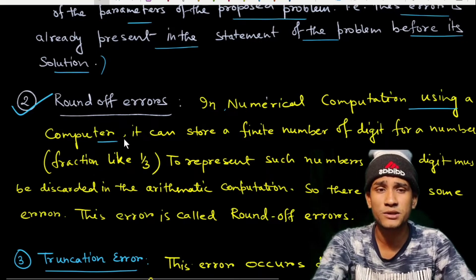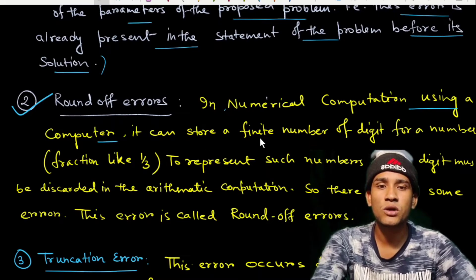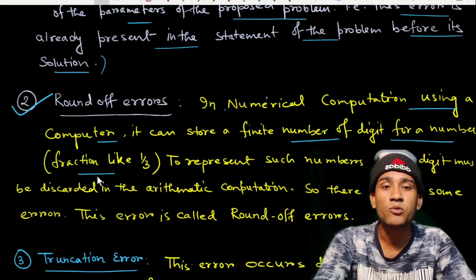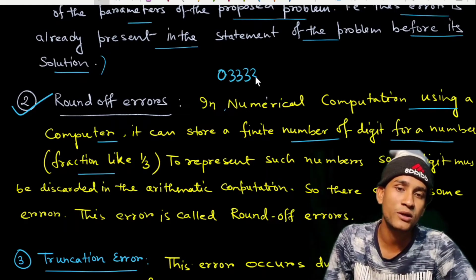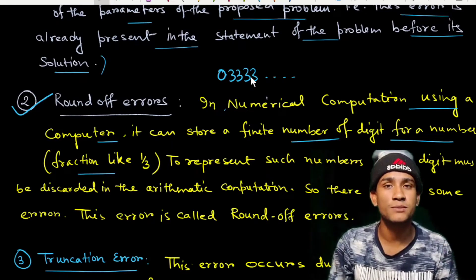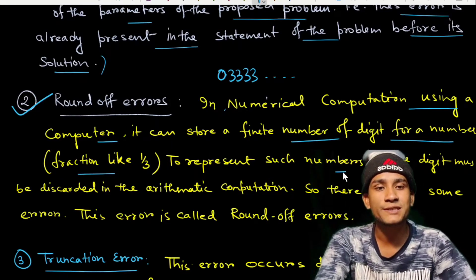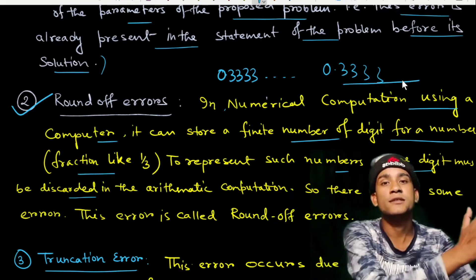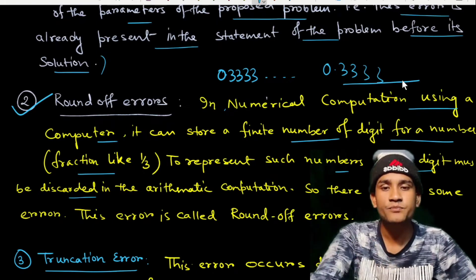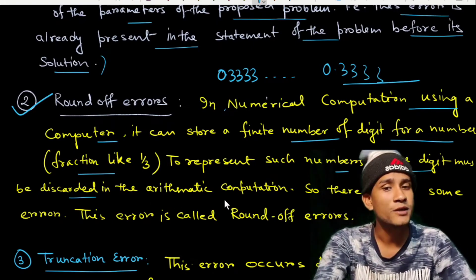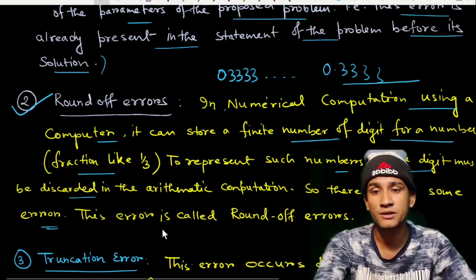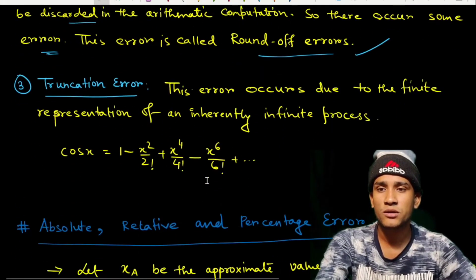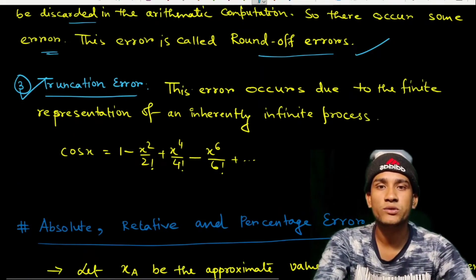The second source is round-off error. In numerical computation using a computer, the computer can store only a finite number of digits for a number. For example, for the value of one-third, the computer stores digits up to a certain number of decimal places, and the remaining digits are discarded. This type of error due to discarding of digits is known as rounding error or round-off error.